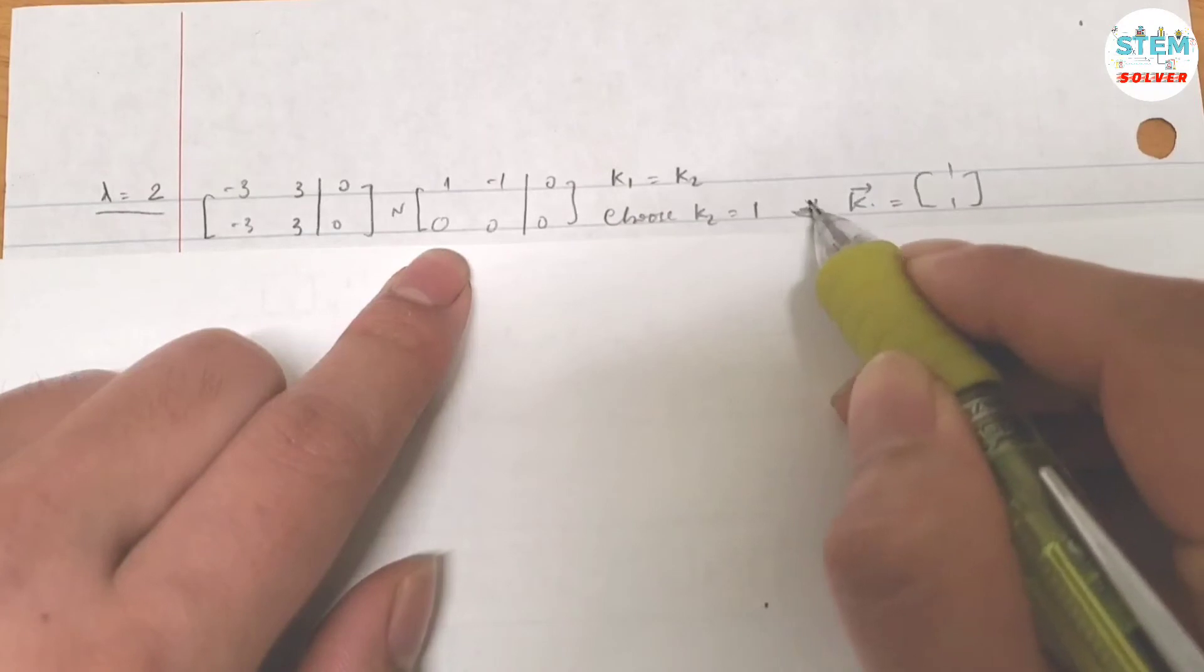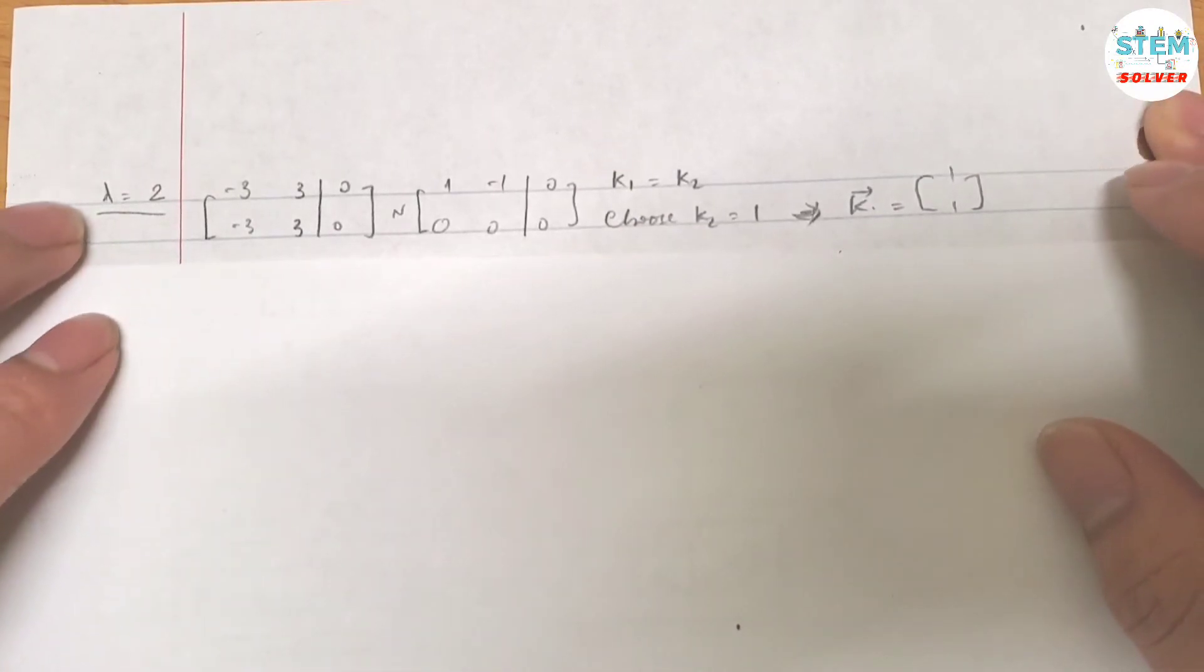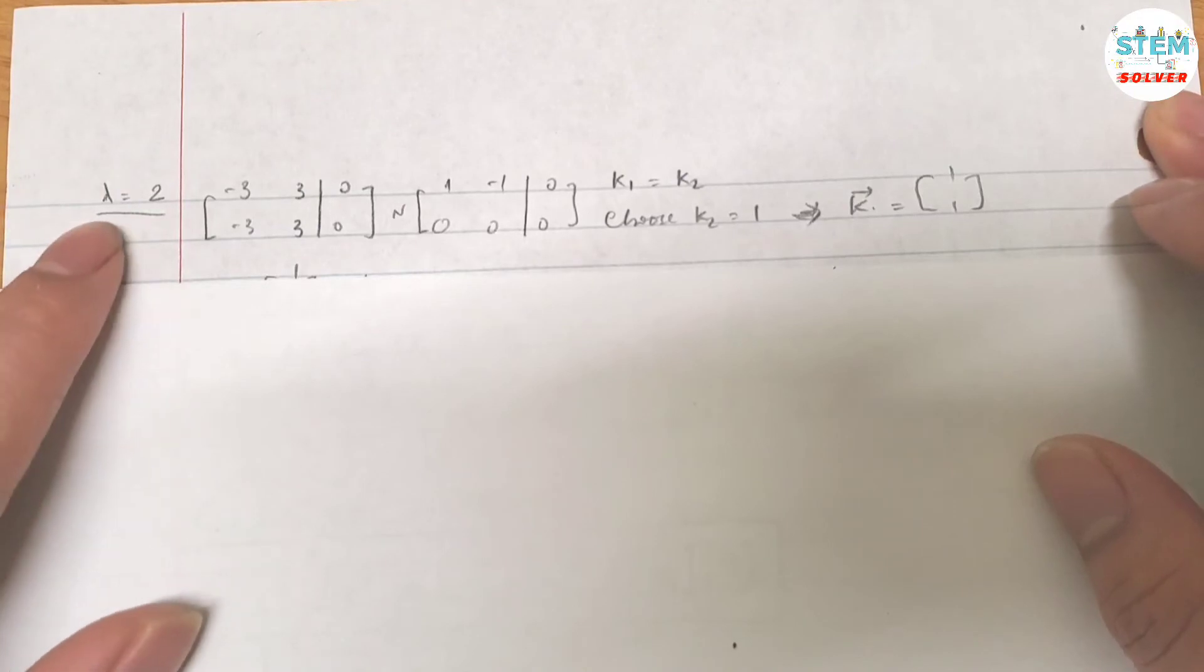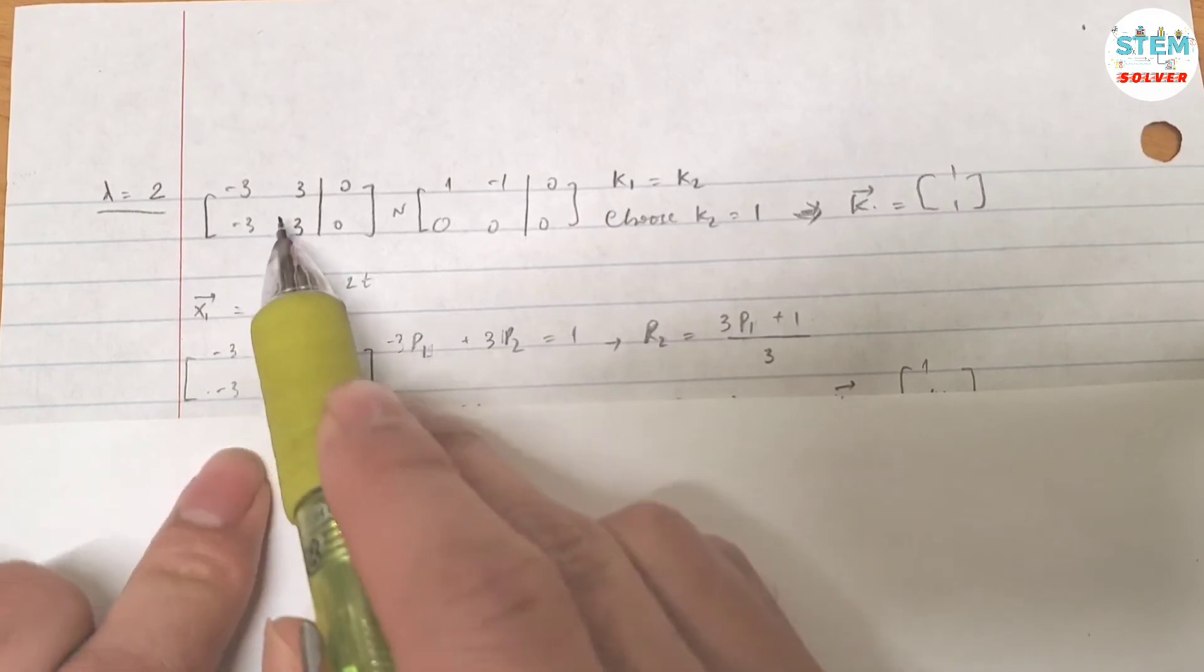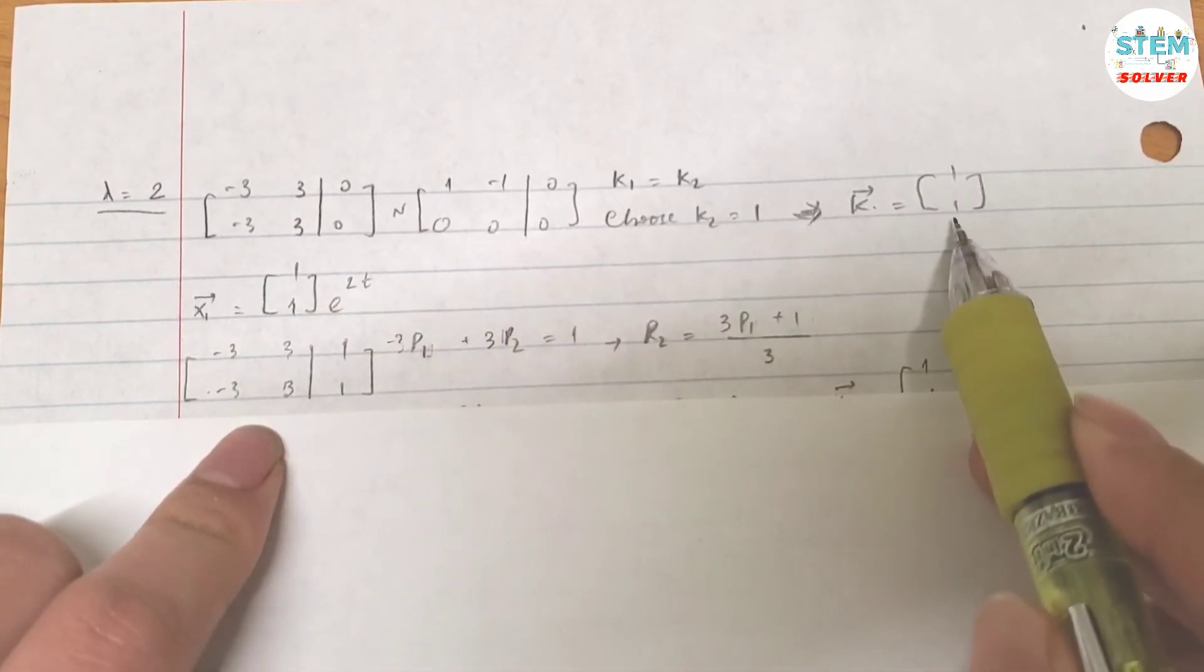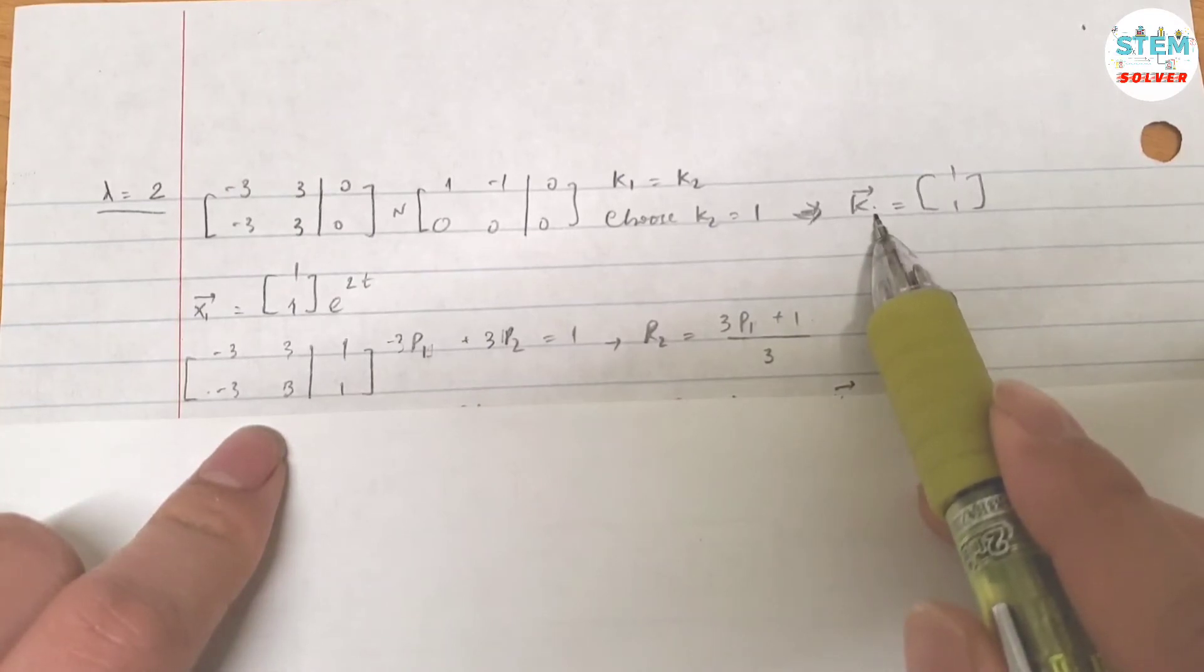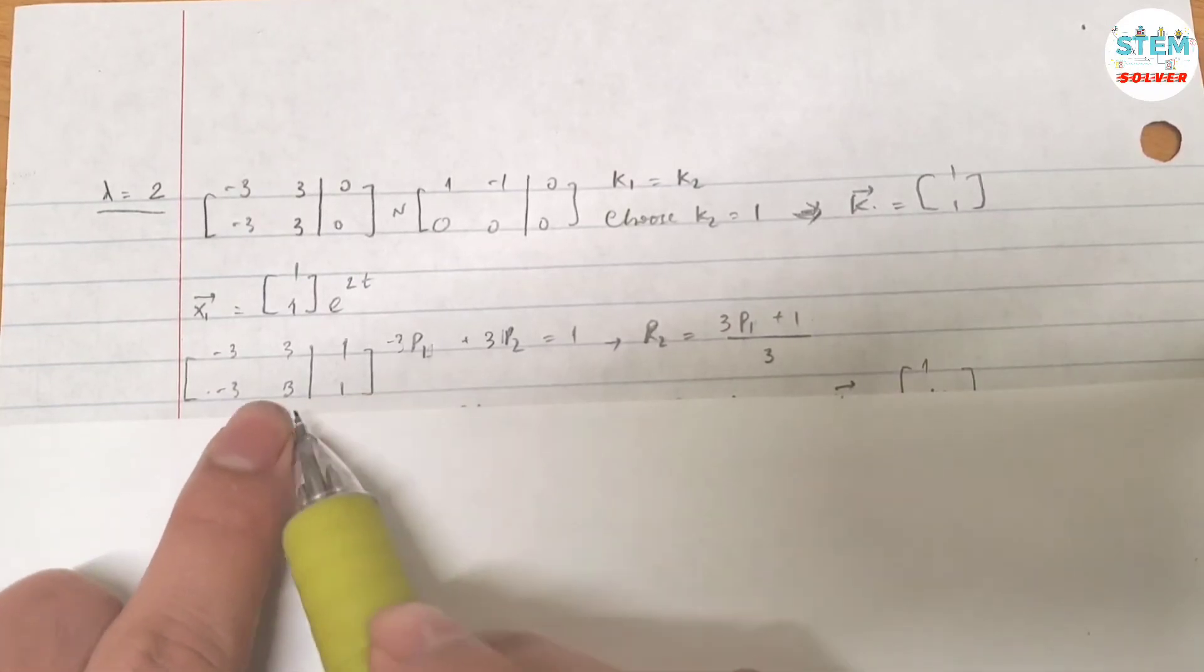Then my vector k is [1, 1]. Now, how to find the other eigenvector? Because you have only one lambda, you're going to use the same matrix and then augment it with the value of the vector you just found, which is the vector k in this case. So I have this matrix augmented with [1, 1].